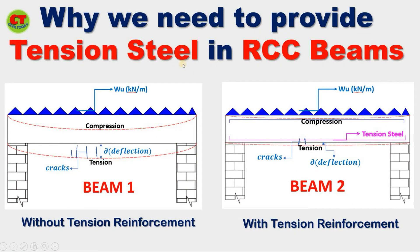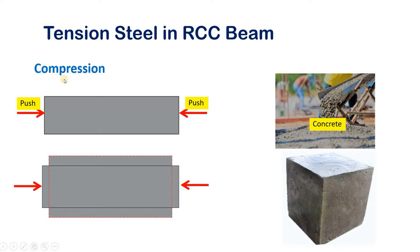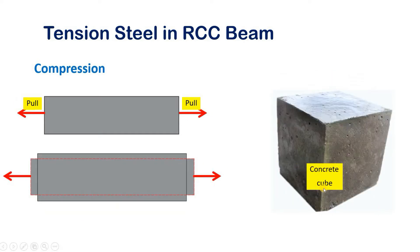When we have to provide tension steel in RCC beams, before going to the concept, let us first understand a few things. Compression: when a load is applied on any object, the object tends to decrease in its volume without any cracks. That type of material is said to be good at compression. The best example of a compression member is concrete, since concrete is a brittle material — it can take compressive loads.